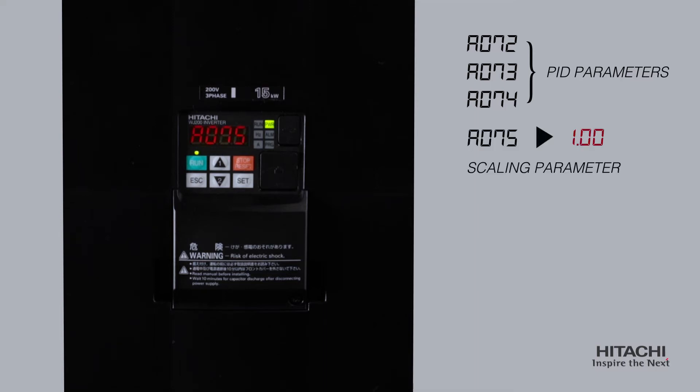A75 is the scaling parameter or multiplier from a 0 to 100% built-in scale. Therefore, based on the transducer or feedback signal scale, we can adjust the set point and feedback to match the system operational range.